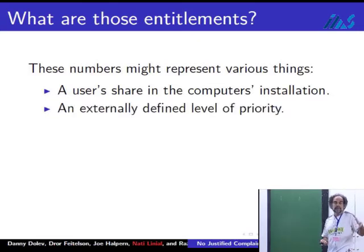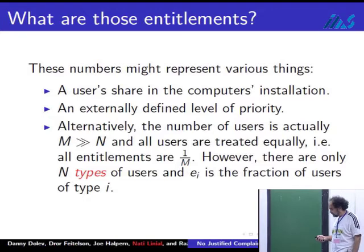Perhaps all these users are part of one bigger thing, different departments in one operation, and management decides to give priorities to different activities. Another possibility is that there are actually big N users, a much bigger number, and we're respecting each player equally. The N in this description corresponds to N types of users, and the e_i just tells you the proportion of users from each type. That's the meaning of entitlement.